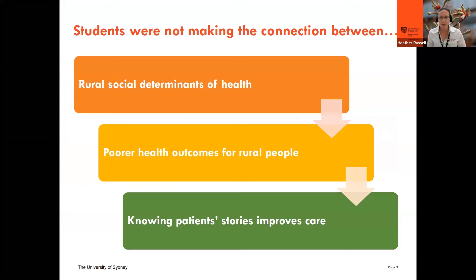How this all came about was that we could see students really weren't making the connection between the rural social determinants of health — that sort of population picture — and health outcomes for rural people, which tend to be poorer than those of our urban counterparts. And then working out how you actually apply all of that in the context of individual patient care. So we're trying to put all of those things together to really improve students' skills and expertise in social histories.